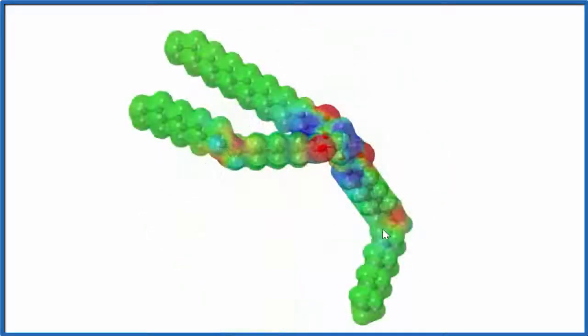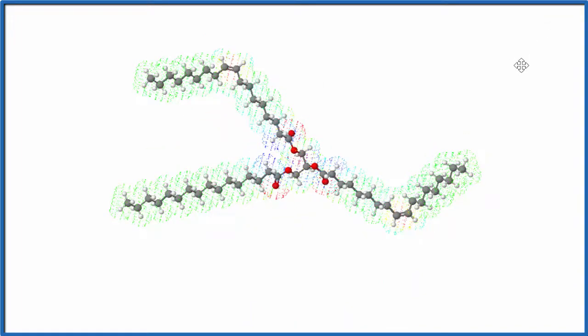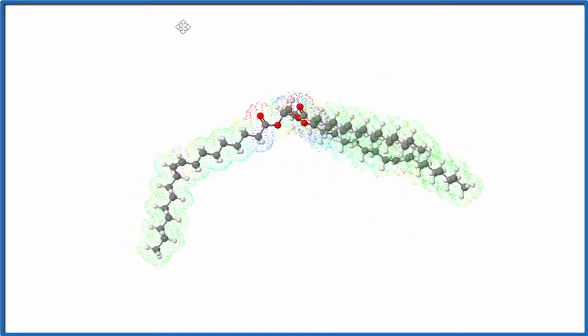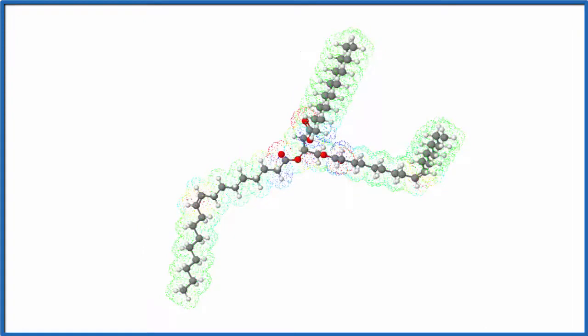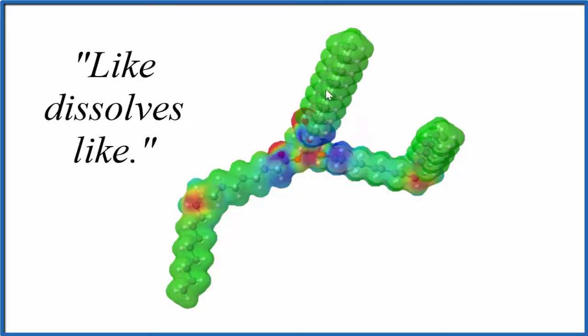Let's take a look at fat. This is a molecule of the type of fat found in the human body - it's called a triglyceride. If we look at the surface like we did with the vitamin K molecule, you'll see that most of it is that same green. It's nonpolar, it doesn't really have a charge. Because of that, vitamin K is going to dissolve really well in fat.